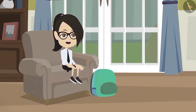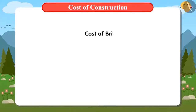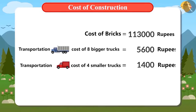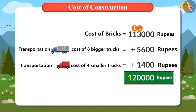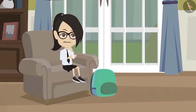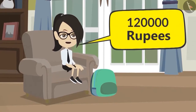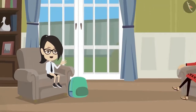Now I have calculated all the expenses related to bricks — both the value of the bricks and the cost of transporting them. Adding them all together, the answer is 1,20,000 rupees. This means it will cost 1,20,000 rupees just to purchase and deliver the bricks needed to build the top floor of our house. Let me inform mom.